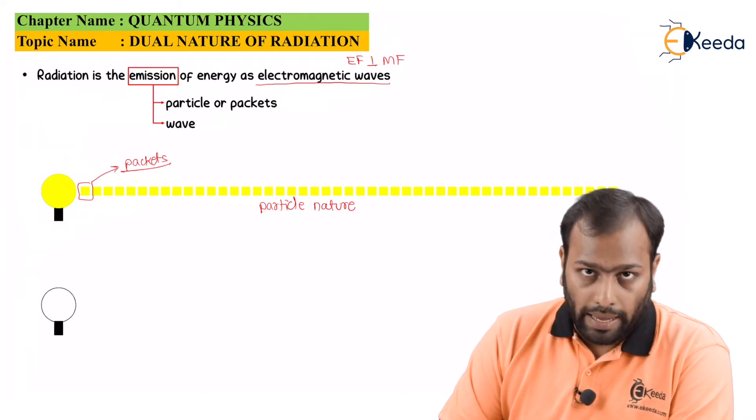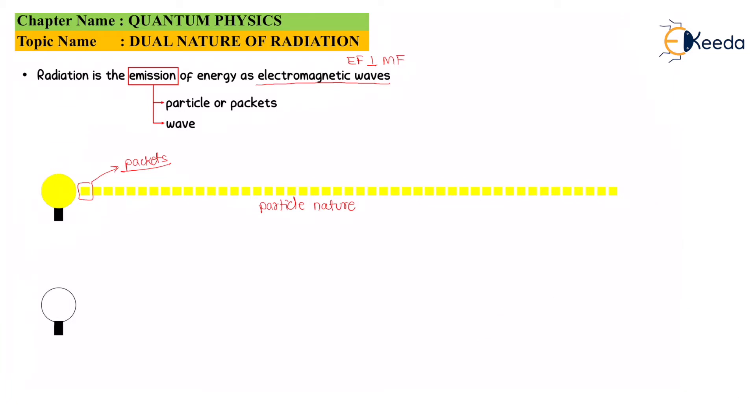Now, I'll take this source again and this time, I'll refer to the wave nature of light. If I turn this on, as you can see, the wavelengths are being traversed. This indicates the wave nature of light.